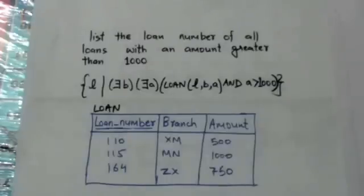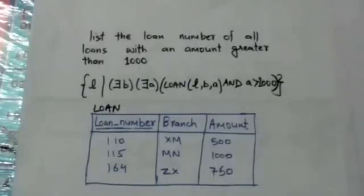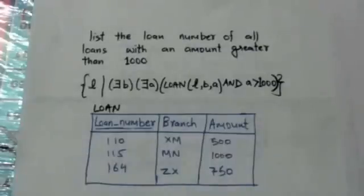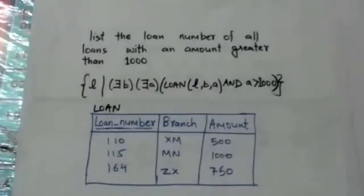The condition for selecting a tuple is specified following the bar. The condition in this query is that the sequence of values assigned to the variables l, b, a must be a tuple of the loan relation, and the value of a must be greater than 1000.